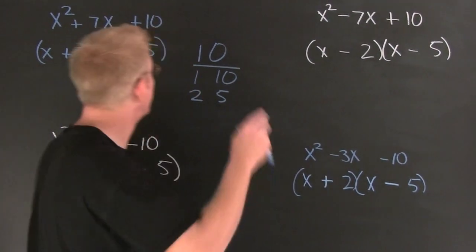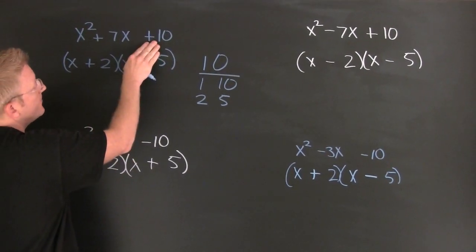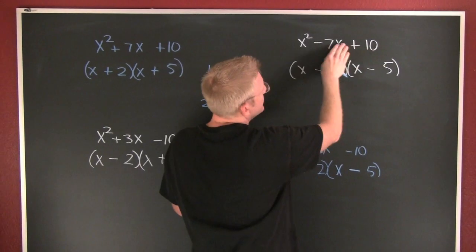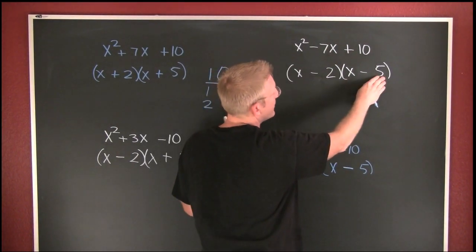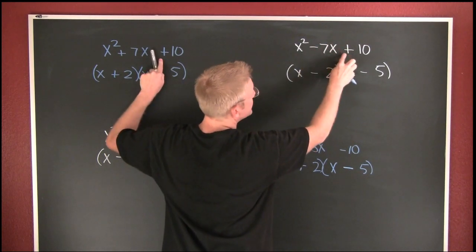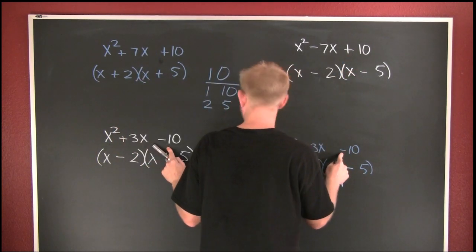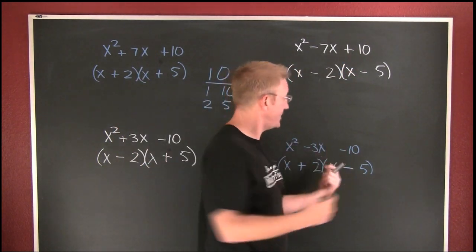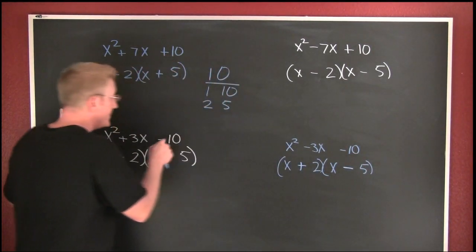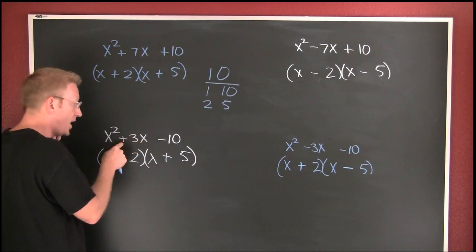Let's recap. Factors of 10 that add to be 7 — signs are the same, both positive. Factors of 10 that add to be 7 with 2 and 5 — signs are the same, both negative. In those two cases the signs are the same. In the other cases the signs are different — that's what those guys say. Signs different: the big one is positive in one case, and signs different with the big one negative in the other.